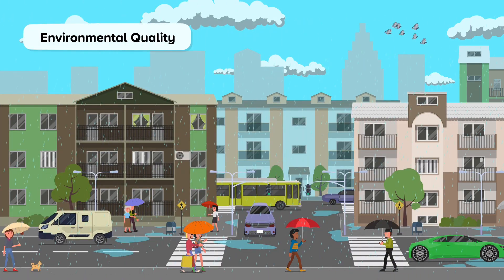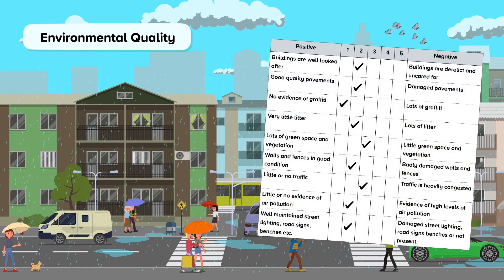Environmental quality surveys are used to measure the look and feel of a location. Different aspects of the chosen environment are given a score, often using a scale such as 1 to 5. Factors like building condition, vegetation, and the presence of litter can be assessed as relevant to the study. Even though this type of survey assesses the quality of the surroundings, it is still a quantitative method as scores are being applied.